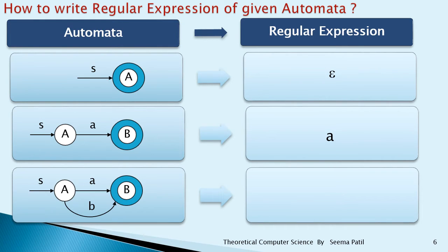The next automata has two states; A is the starting state, B is the final state, and two inputs A and B are given. Here you have to write the regular expression as A + B, because A and B are two parallel edges. Whenever there are parallel edges, you have to write a plus sign. So the regular expression is A + B.